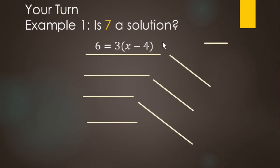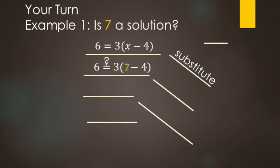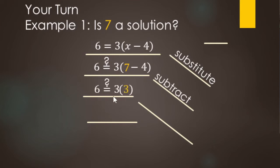Now, is seven a solution to this equation? We're looking to see if it makes a true statement, so we replace X with seven. We have a question mark because we're checking if it is equal. Starting with parentheses: seven minus four makes three. We still have the six. Next, three times three makes nine. Six does not equal nine, so this is not going to be a solution. Seven is not a solution because six does not equal nine — we wanted it to be true, but it's false.